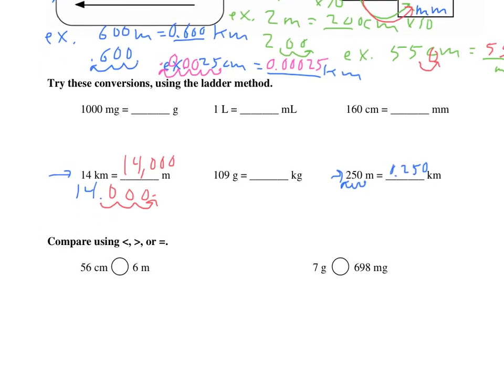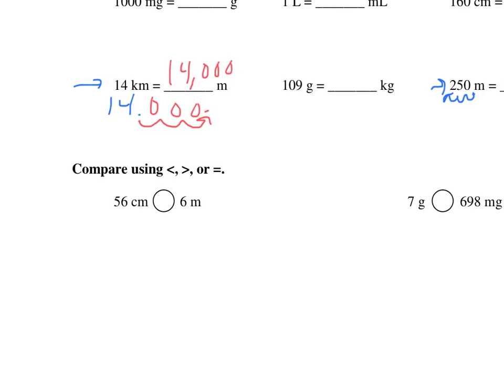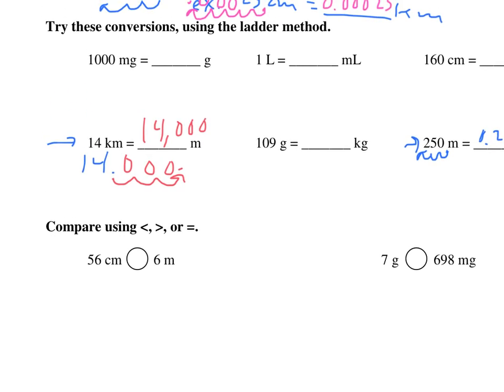Down here at the bottom we have some that are comparing using those less than, greater than, or equal signs. The only way that you can compare two things is if they have the same units, so you have a choice. You can either convert 56 centimeters into meters or 6 meters into centimeters. We could do centimeters to meters, go one two, and now that's 0.56 meters. How does that compare to 6 meters? Clearly 6 is greater, so there's the answer for this one. But we could have also done this one this way - we could have instead said that 6 meters is 600 centimeters, and clearly 600 is greater than 56. We're going to arrive at the same conclusion.